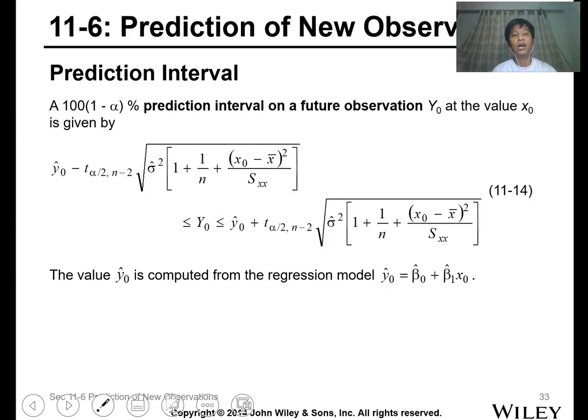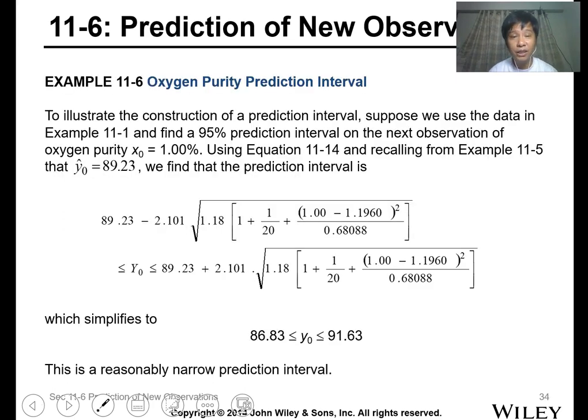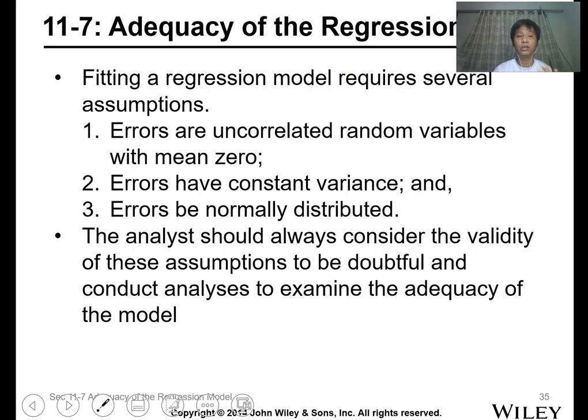For predicting future observations, this is your next data set. Using this formula, you can predict the value of the next observation. To illustrate the construction of the prediction interval, using the data from example 11-1 and recalling that y is 89.23, we find the prediction interval for this value is between 86.83 to 91.63, which is a reasonable value.